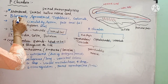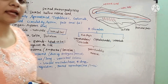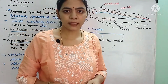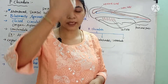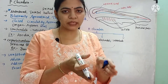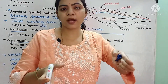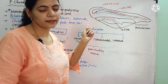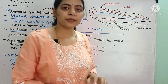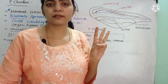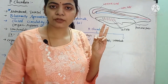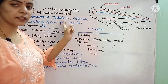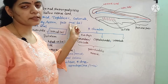These are bilaterally symmetrical animals. Bilateral symmetry means if you cut the animal in one plane, that divides the animal into two equal halves — a right and left part. And these are triploblastic animals; they consist of three embryonic germinal layers: outer ectoderm, middle mesoderm, and inner endoderm. Hence, they are triploblastic.